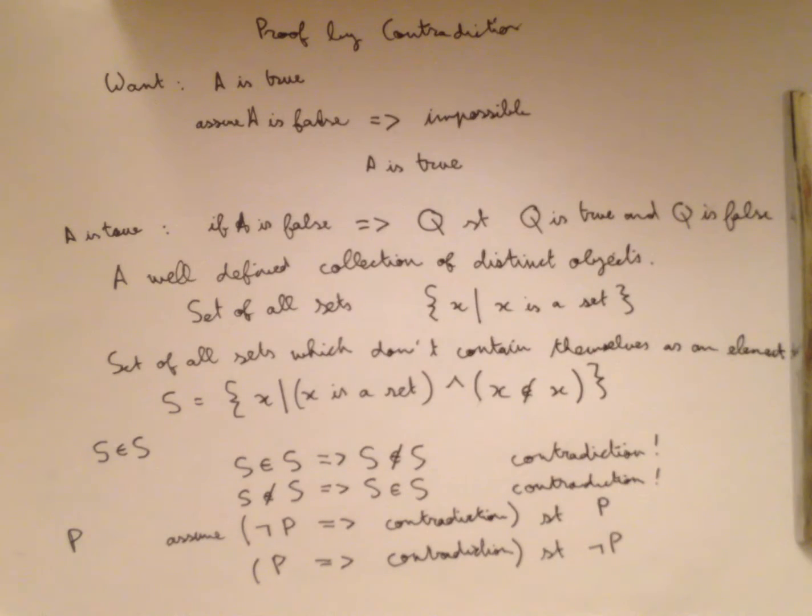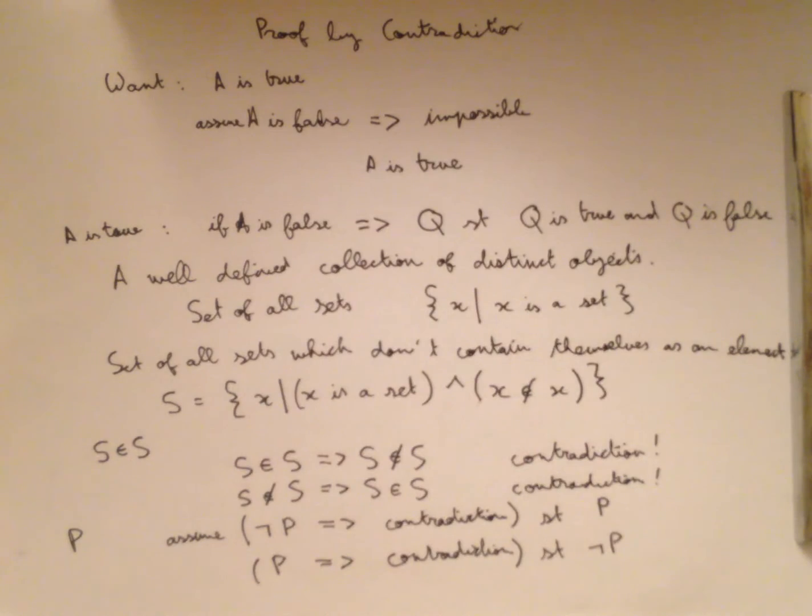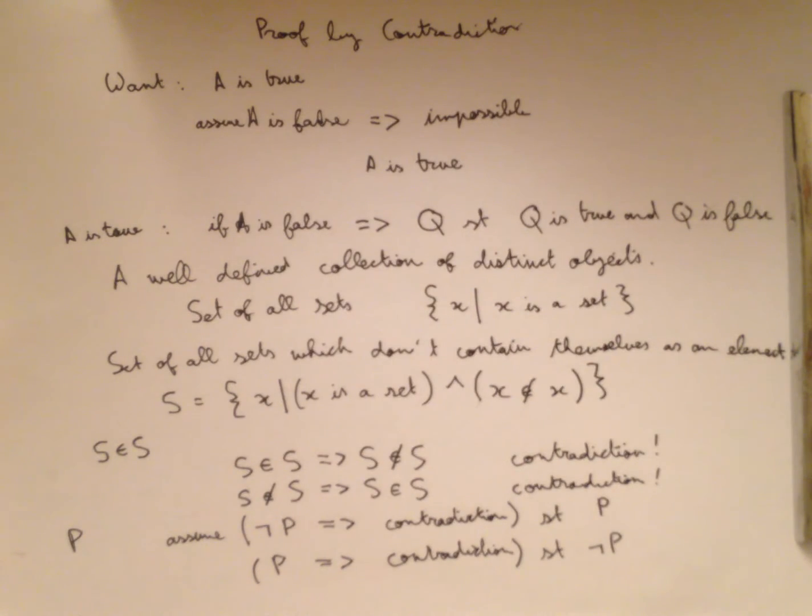And so this mathematical system that we've developed based on this definition, a well-defined collection of distinct objects, is really not that interesting because everything is both true and false in it. So we don't study it very much, and next time we're going to look at one that patches up this problem.